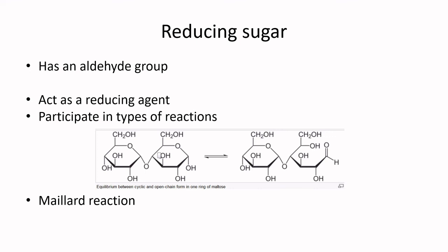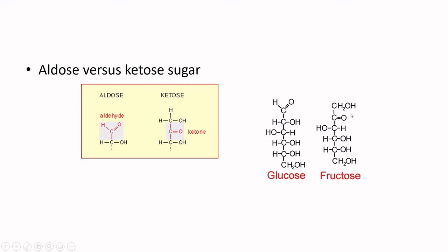Reducing sugars imply that there is an open aldehyde group that can participate in Maillard reaction. In the case of maltose, it has one open aldehyde group that can participate — the second aldehyde group can't participate but at least one can. In the case of sucrose, it's not actually the sucrose participating — it is the breakdown of sucrose, so the freed glucose can participate in Maillard reaction. So in quick summary, we've got that aldose versus ketose structure in our sugars.